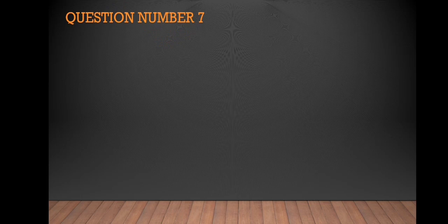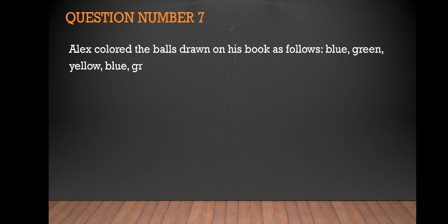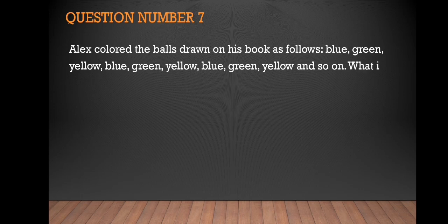For question number seven, Alex colored the balls drawn on his book as follows: blue, green, yellow, blue, green, yellow, blue, green, yellow, and so on. Following that pattern, what is the color of the 25th ball?